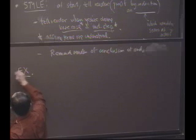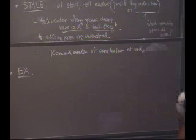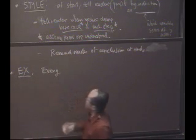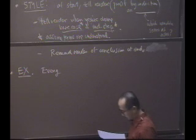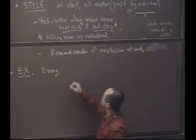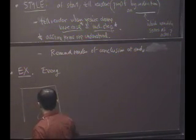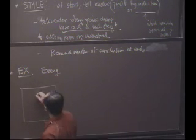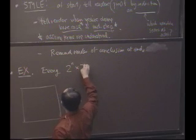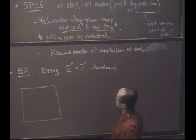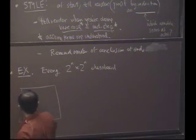So here's an example. This is one of my favorite proofs by induction. Some of you may have seen this in the core classes here. Suppose I have a chess board. So this is an 8 by 8 chess board. But in general, we're going to look at 2 to the n by 2 to the n chess board. So every 2 to the n by 2 to the n chess board, this is, let's say, 8 by 8 here. That's a real chess board, isn't it?